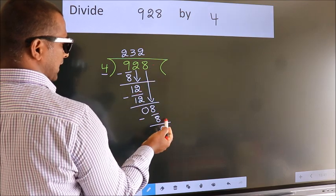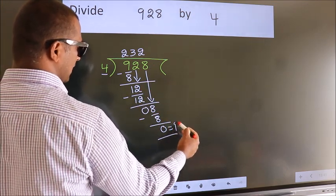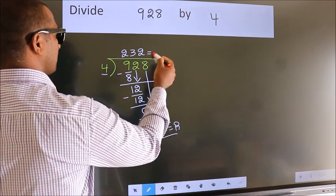No more numbers to bring down. So we stop here. This is our remainder. This is our quotient.